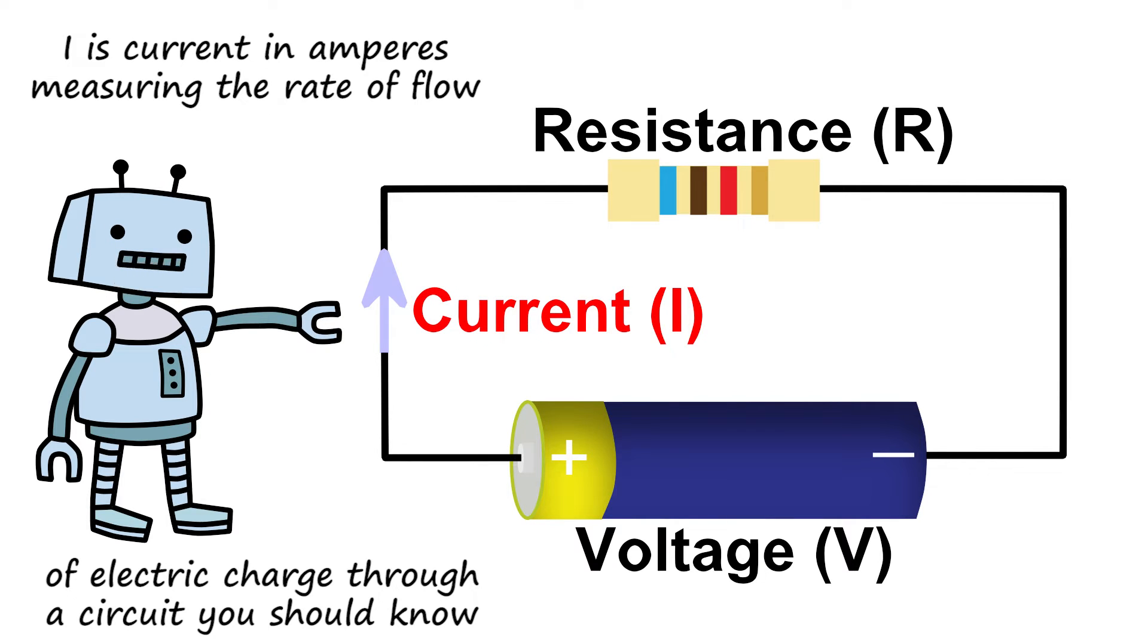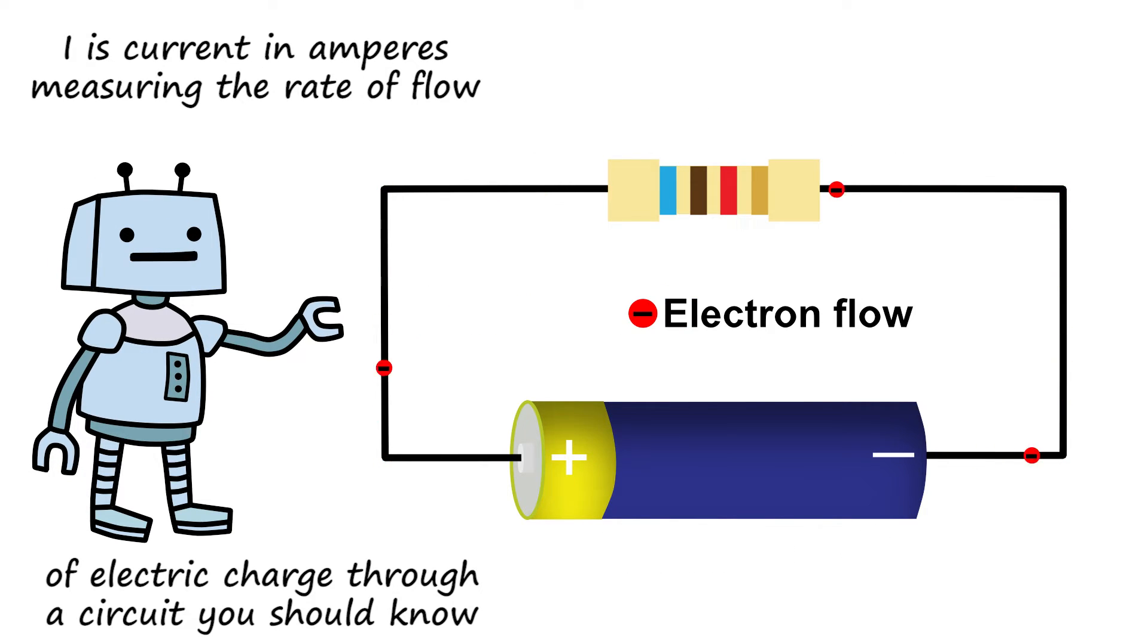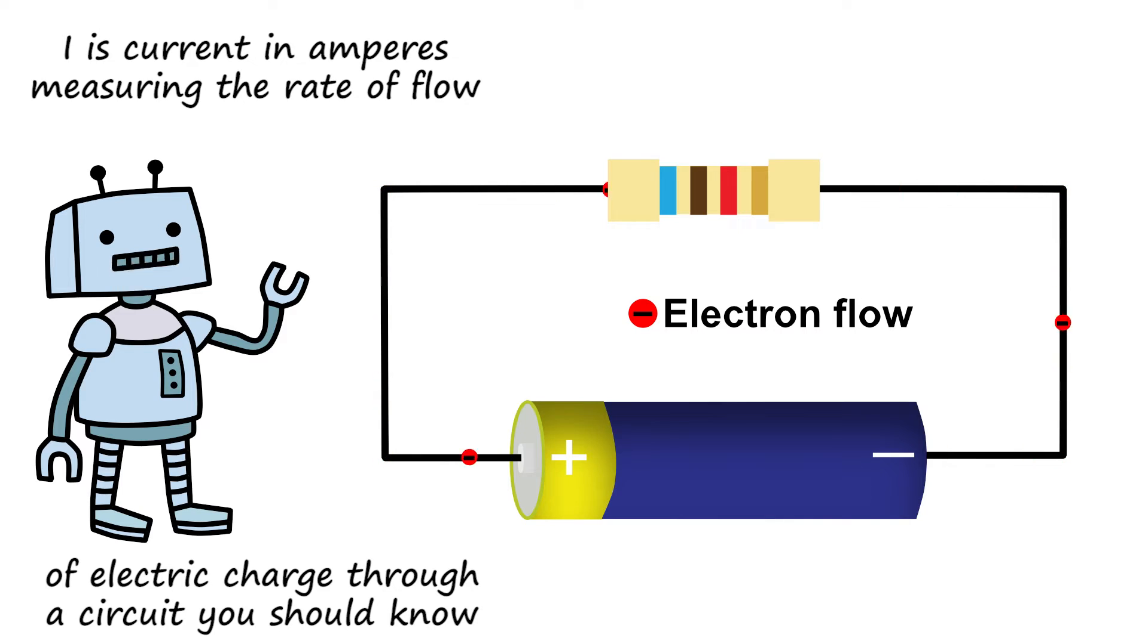I is current in amperes measuring the rate of flow of electric charge through a circuit. You should know!